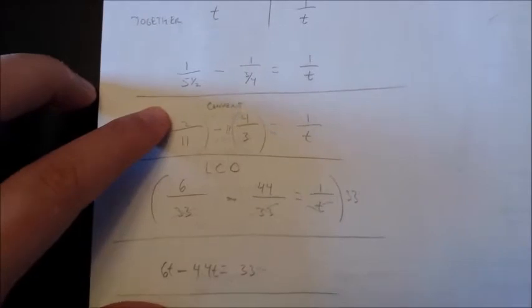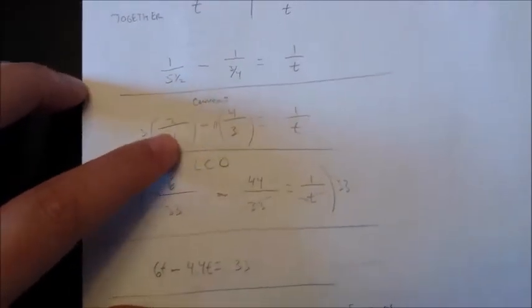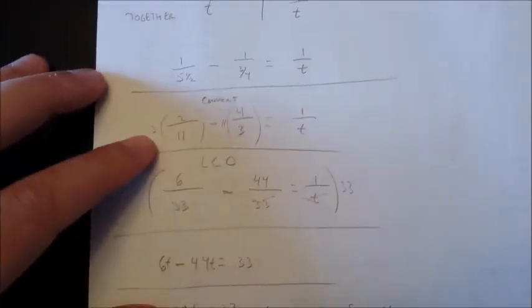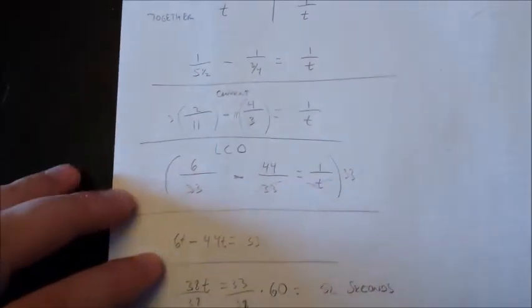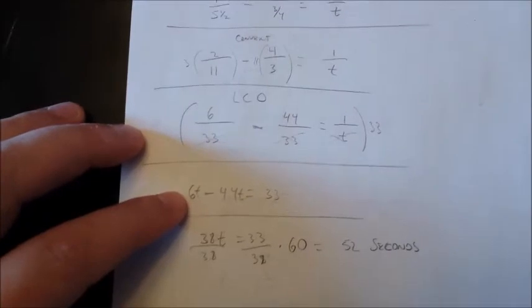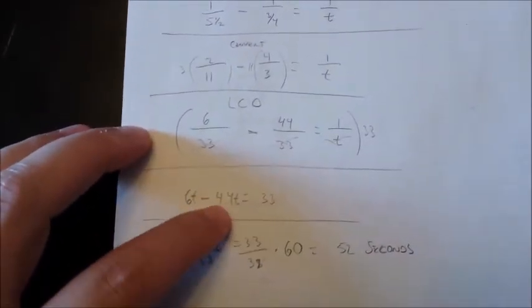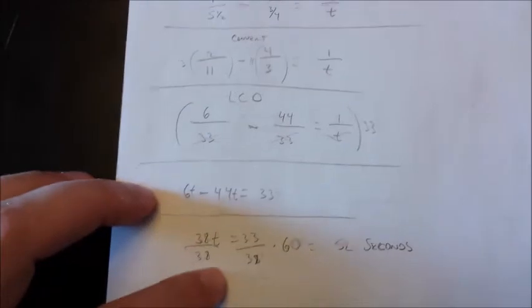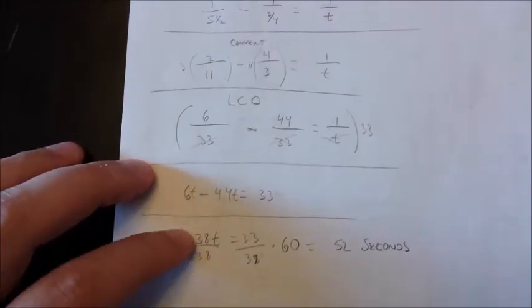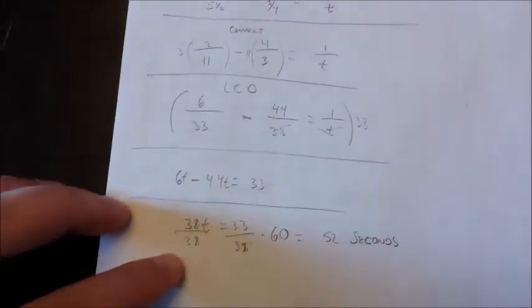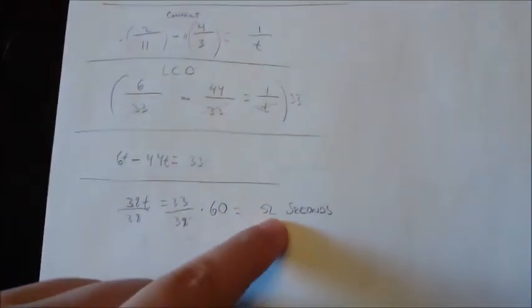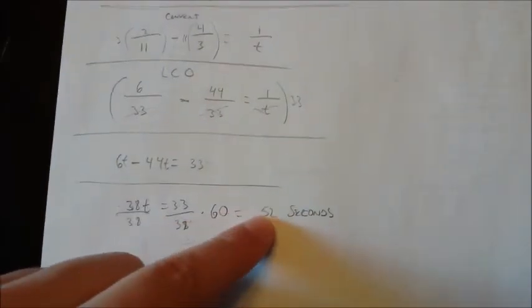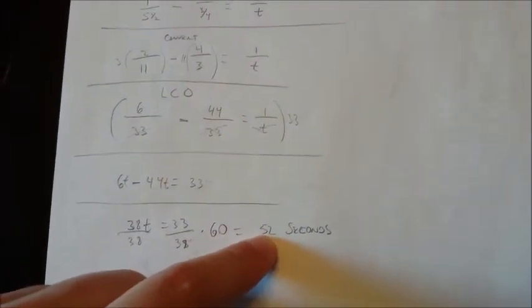So I created this equation. And because I don't like fractions in the denominator, I converted it to 2 over 11 and 4 over 3. Found the common denominator, which is 33. Multiplied everything by 33 and T, which gave me this down here. I should have just subtracted 6T from 44T, but I did that down here instead, which gave me 38T equals 33. Then I divided both sides by 38 and multiplied by 60, converting it back to seconds, and it gave me 52.1 seconds.